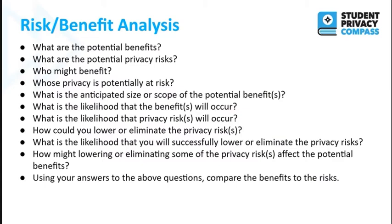For those of you who watched the last training about contextual privacy and edge cases, are there any of those categories that may be more at risk? What is the anticipated size or scope of the potential benefit and the likelihood that the benefits will occur? What is the likelihood that any of those privacy risks, which we talked about during one of the previous trainings, will occur? How can you lower or eliminate the privacy risks? What is the likelihood that you will successfully lower or eliminate them? And how might lowering or eliminating some of the privacy risks affect the potential benefits? Using answers to the above questions, you then compare the benefits to the risks.